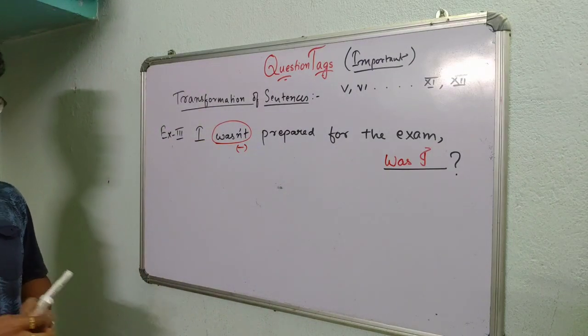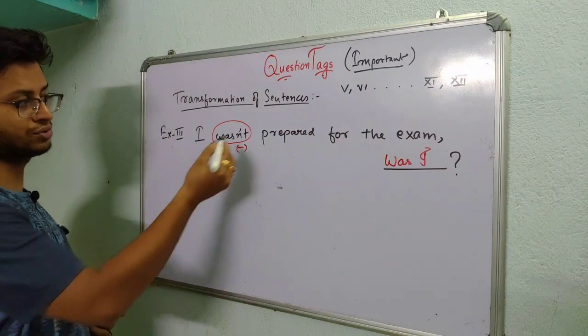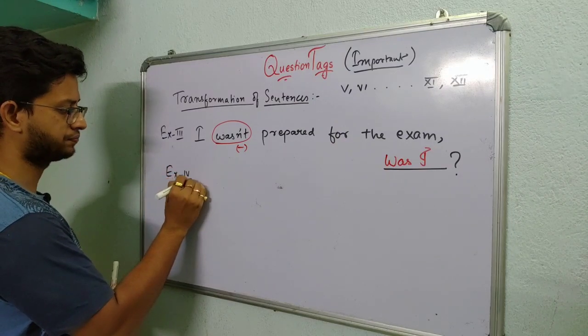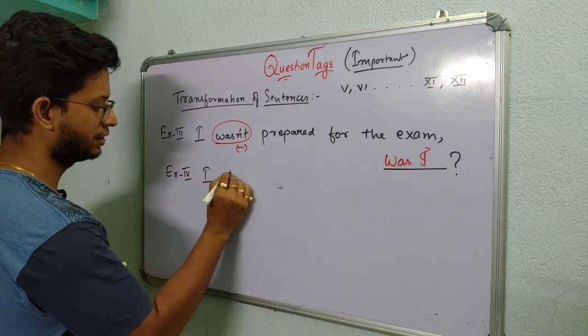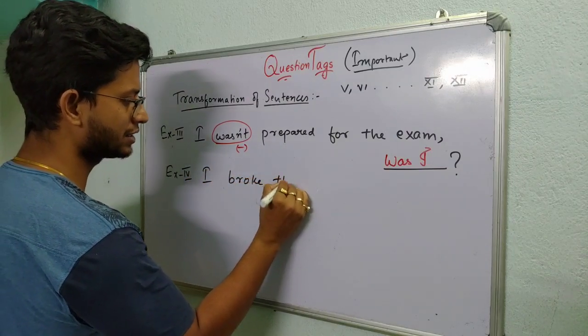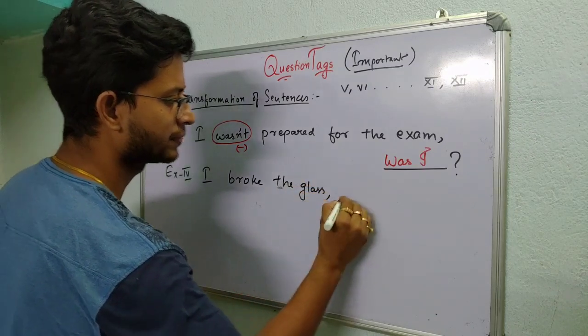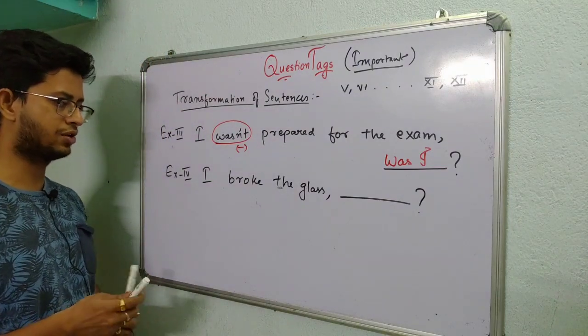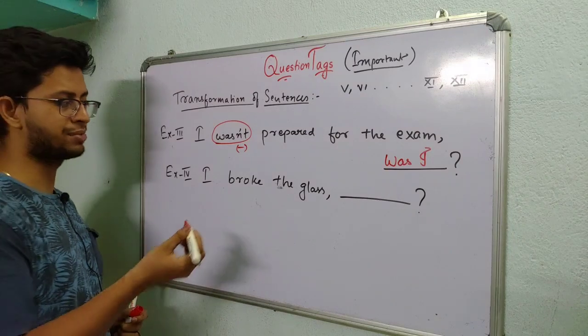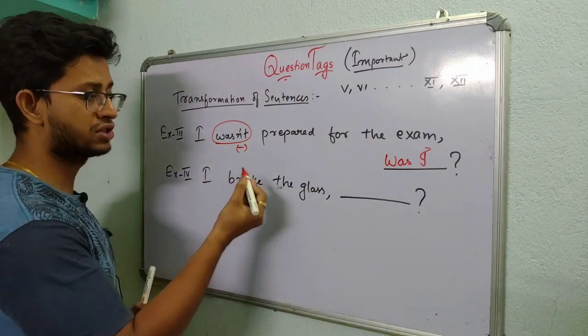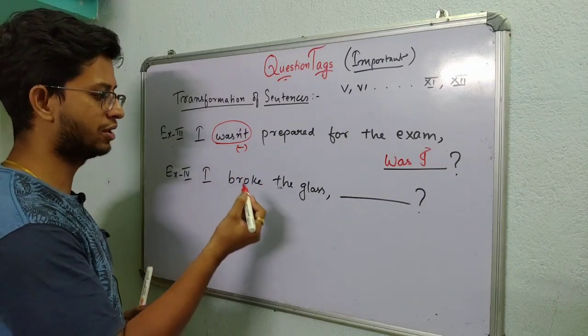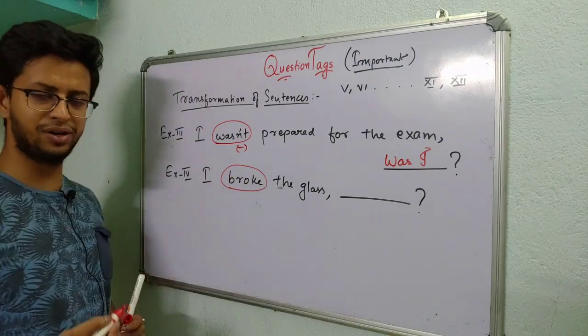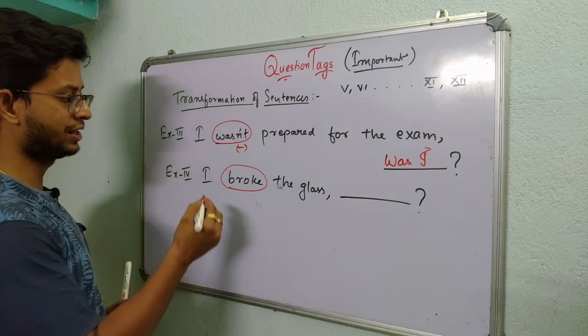I wasn't prepared for the exam, was I. So in this way you have to do. Let us see one more example. This is different. Suppose they haven't given you the helping verb, how will you do it? Example four. Look, I broke the glass. They have given a dash, they have given a question mark. They may give question mark or may not give it. If they don't give it, you have to put it. So look, I showed in first few examples that see the helping verb, see the helping verb. If it's positive make it negative. If it's negative make it positive. Now look, this is such a sentence which doesn't have a helping verb at all.